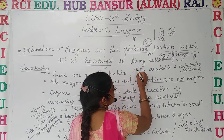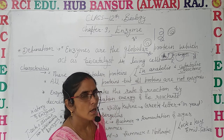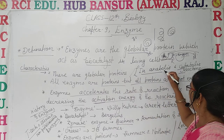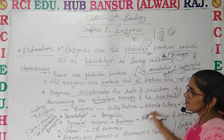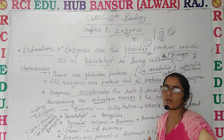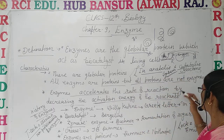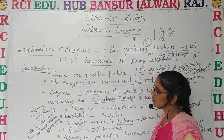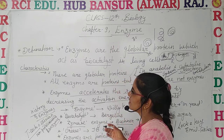Enzymes participate in both anabolic and catabolic reactions. Anabolic reactions are synthesizing reactions, while catabolic reactions involve breakdown. So in both synthetic and breakdown reactions, enzymes actively participate and enhance the rate of reaction.